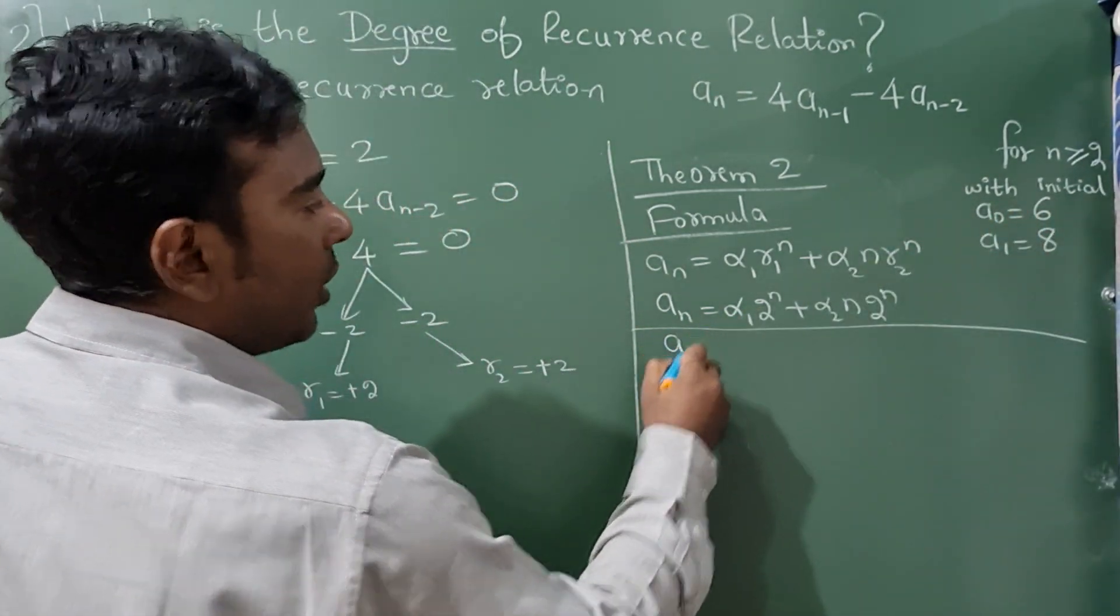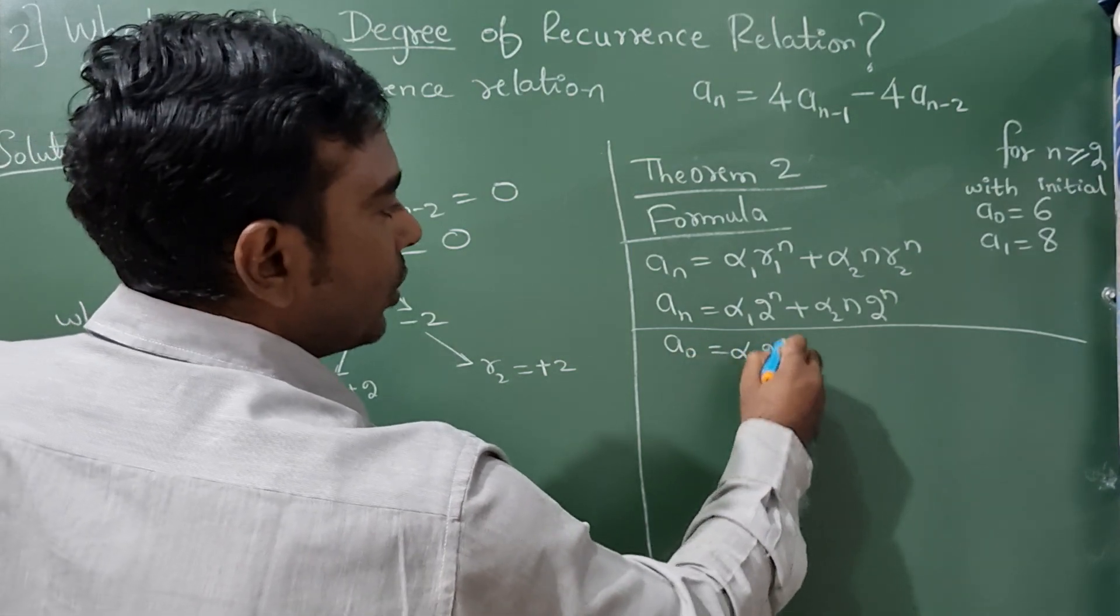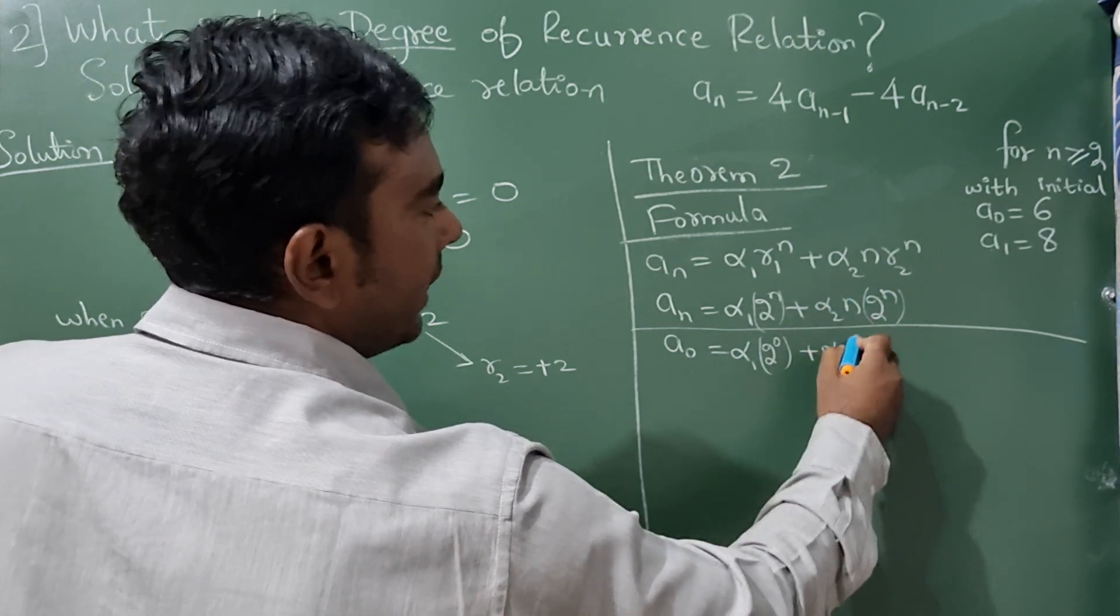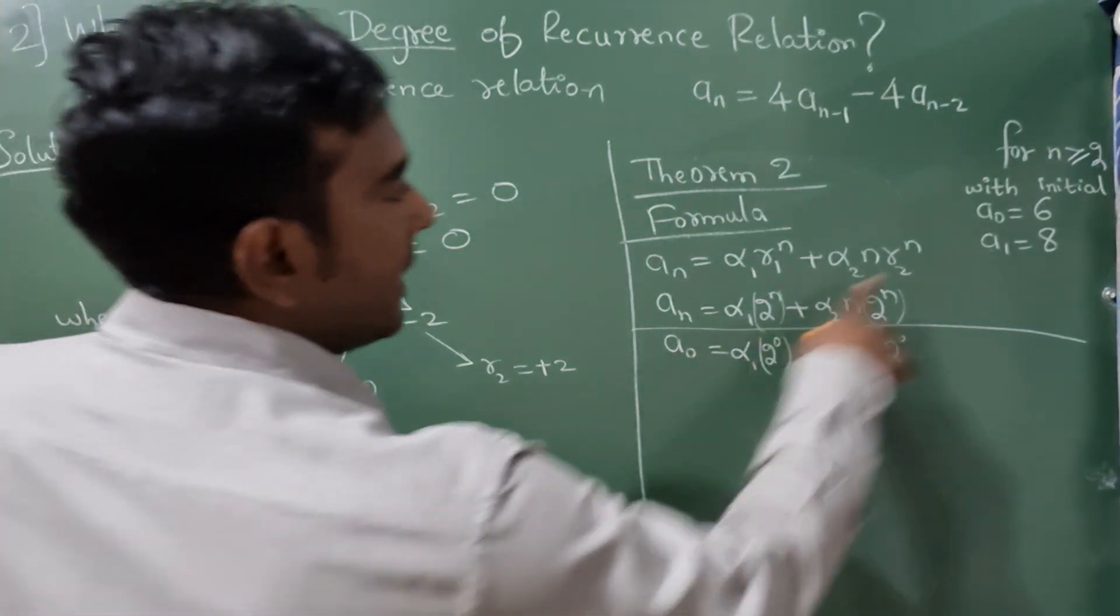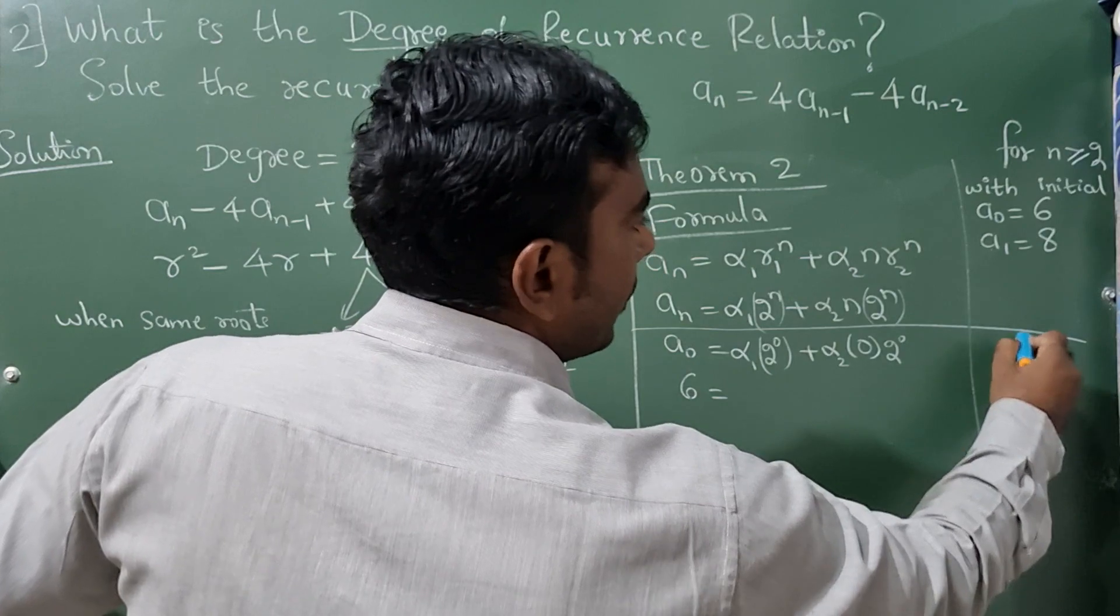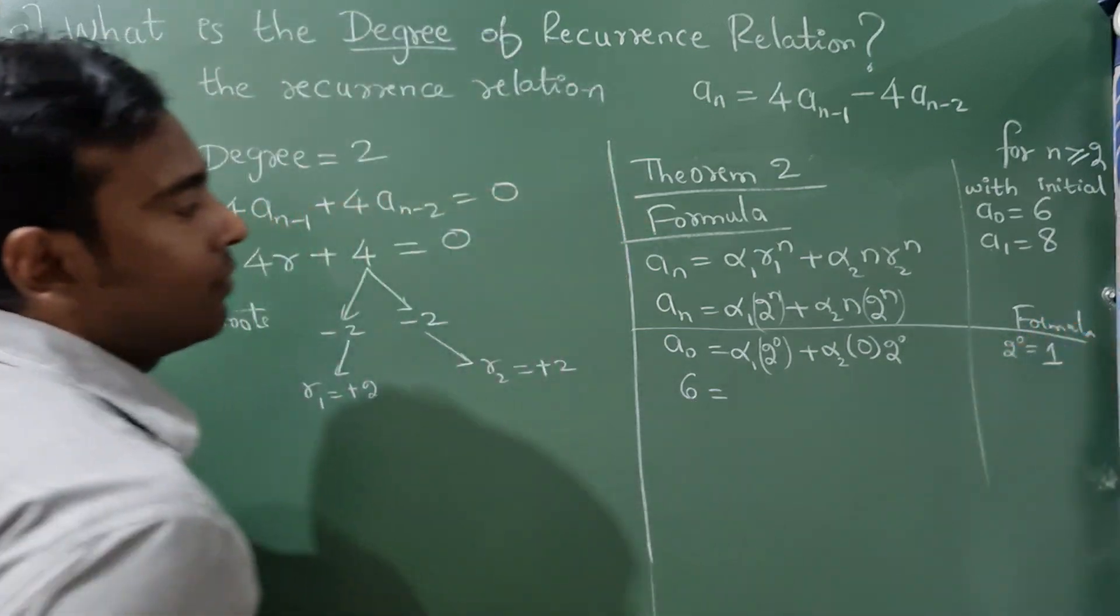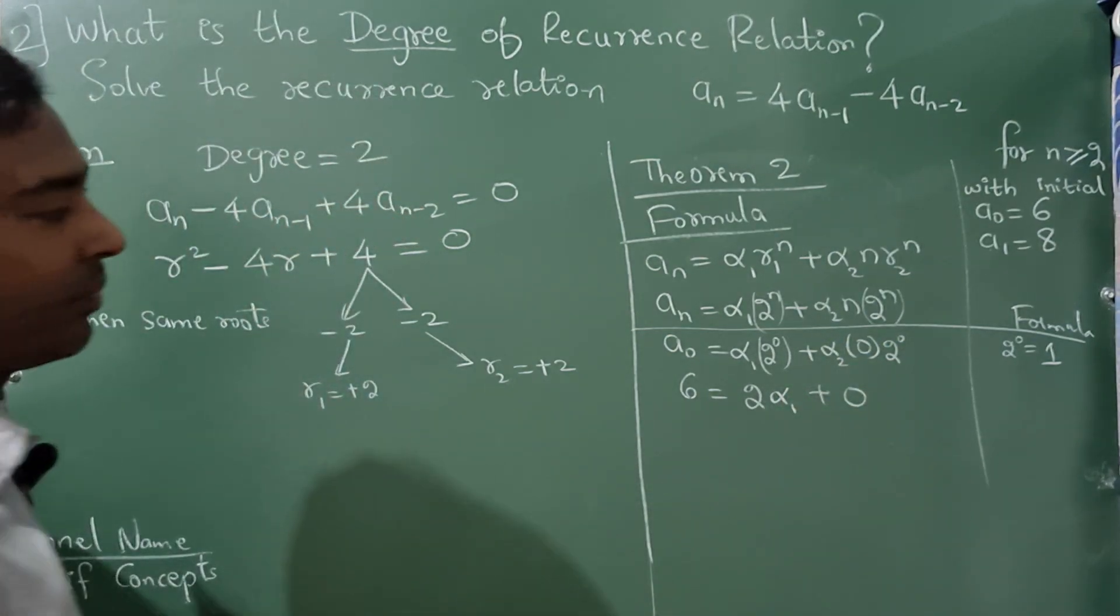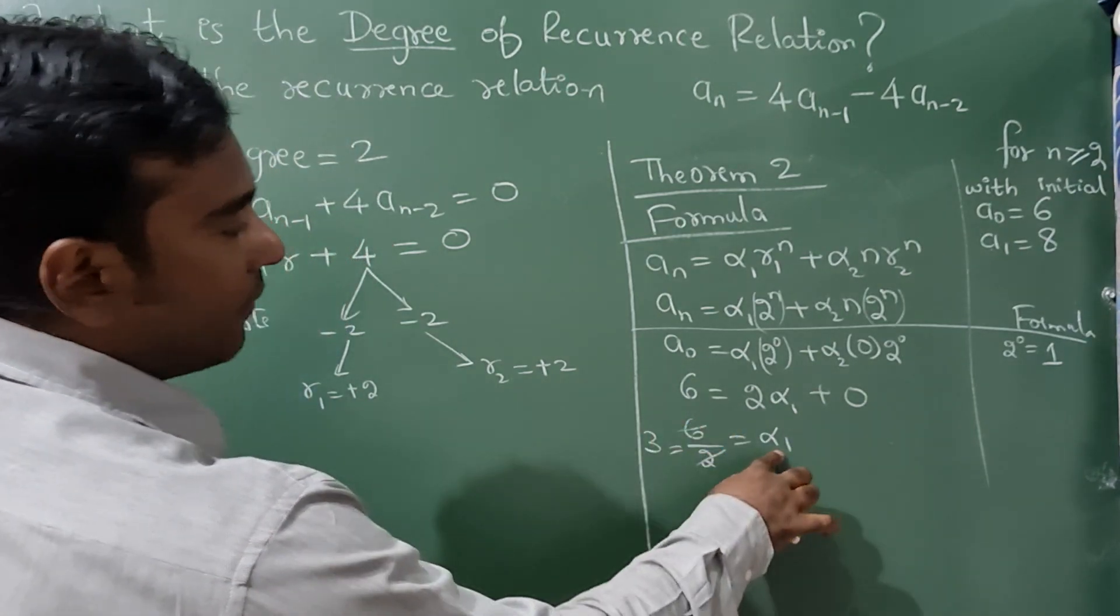Initial condition, so a₀, it means n value is 0 here. Where there is aₙ substitute 0: α₁(2⁰) + α₂(0)(2⁰). What is a₀? It is 6. 2⁰ is 1, always remember anything raised to 0 is 1. This whole term and this whole term will become 0. Now 6 divided by 1, you'll get α₁. So α₁ value is 3.